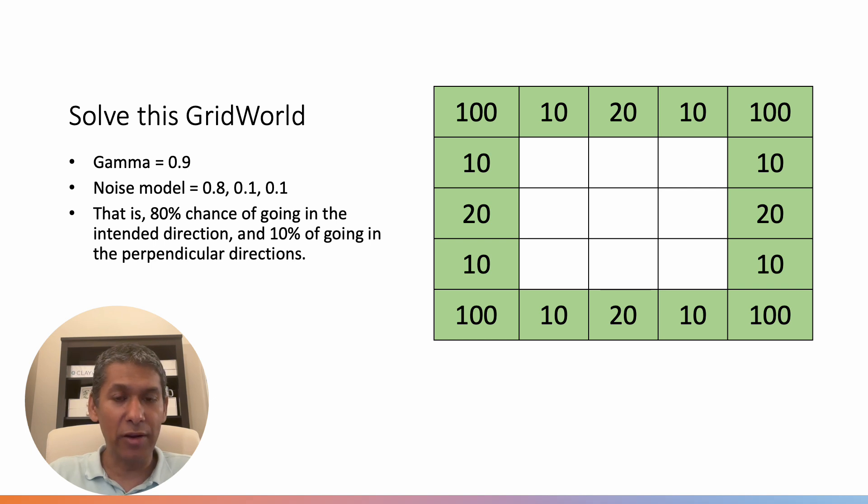That's the V star values here. We could also find a Q star value if we are interested, which is essentially given by the direction. So each of these states will have four Q star values and a single V star value here.